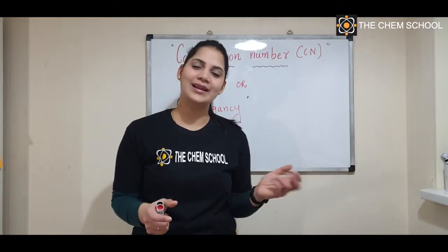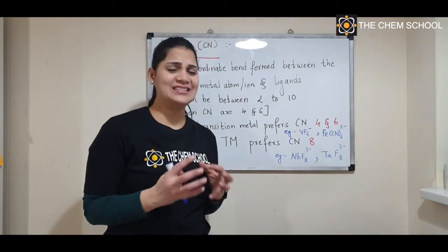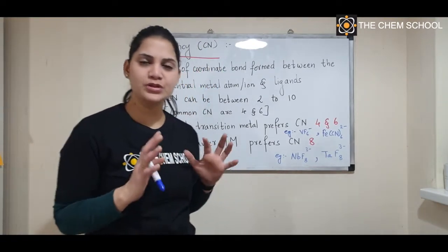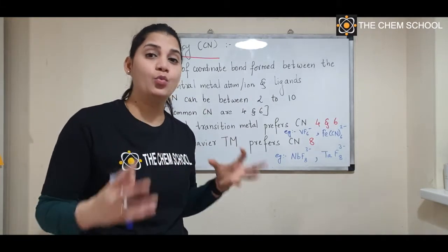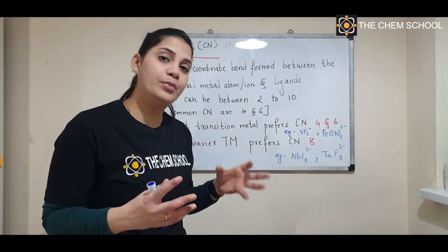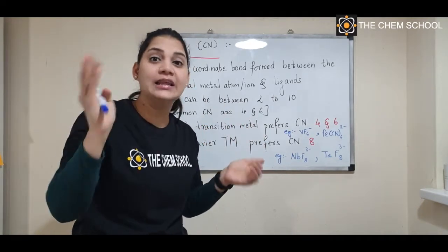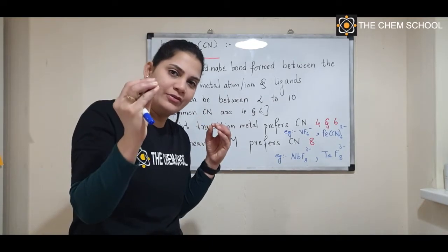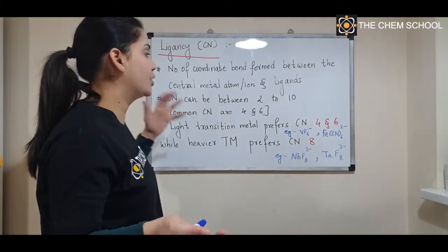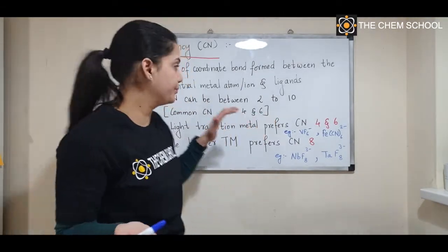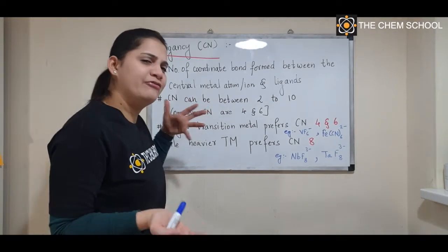Before solving coordination number, let's understand what it is. Coordination number or ligancy is nothing but the number of coordinate bonds formed between the central metal atom and the secondary valence — that is, the ligands. So the number of coordinate bonds between the ligands and the central metal atom is called the coordination number or ligancy.